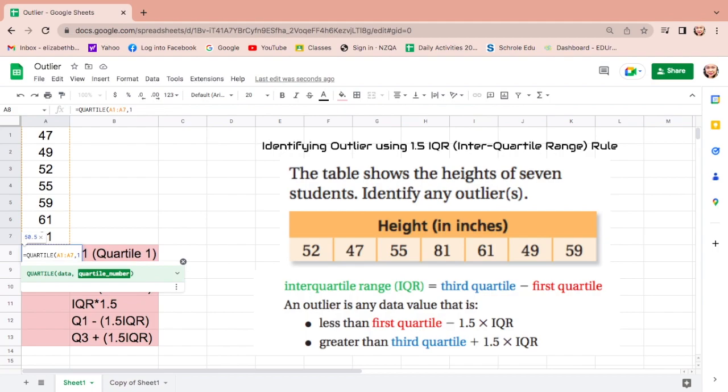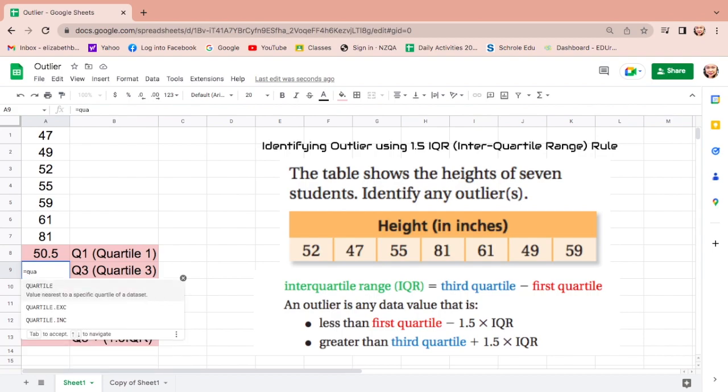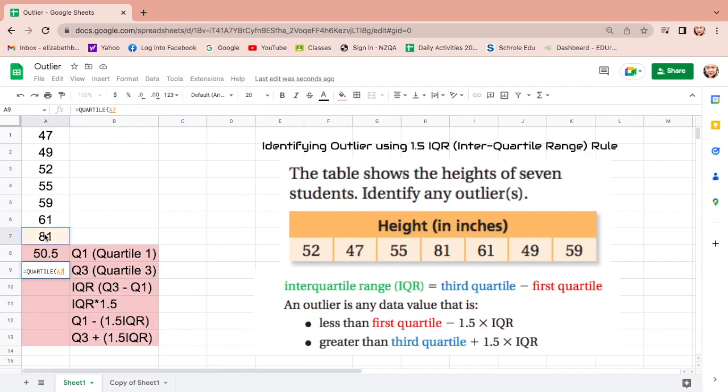Next, quartile 3. It's the same, equals, type Q-U-A, find the suggestion, click quartile, highlight the data, comma, 3 for quartile 3, enter.